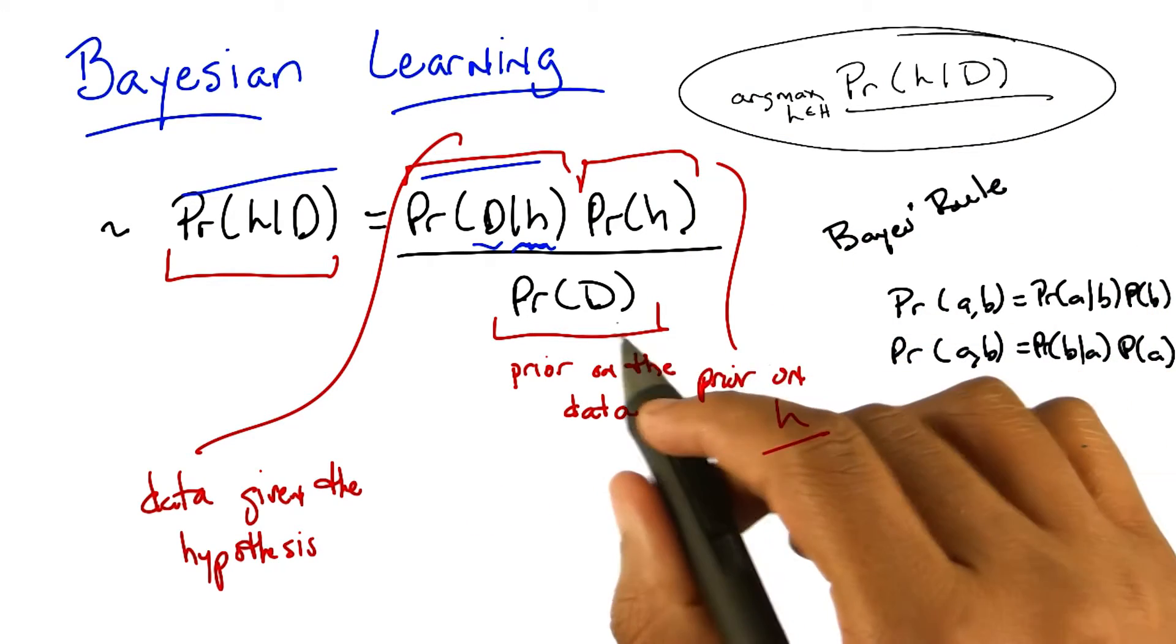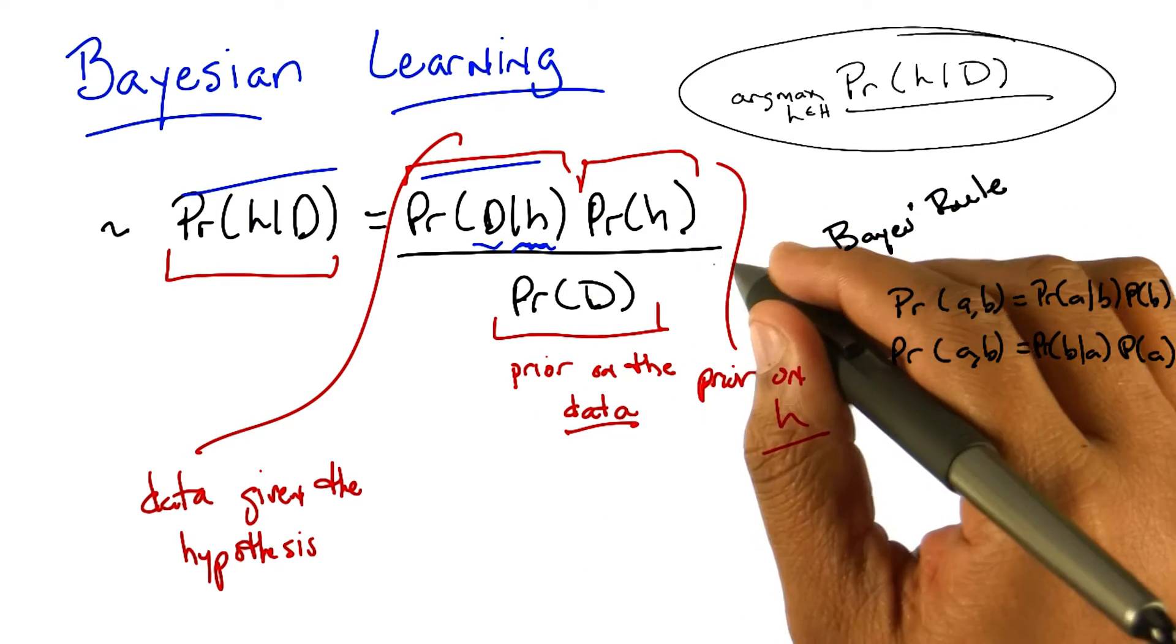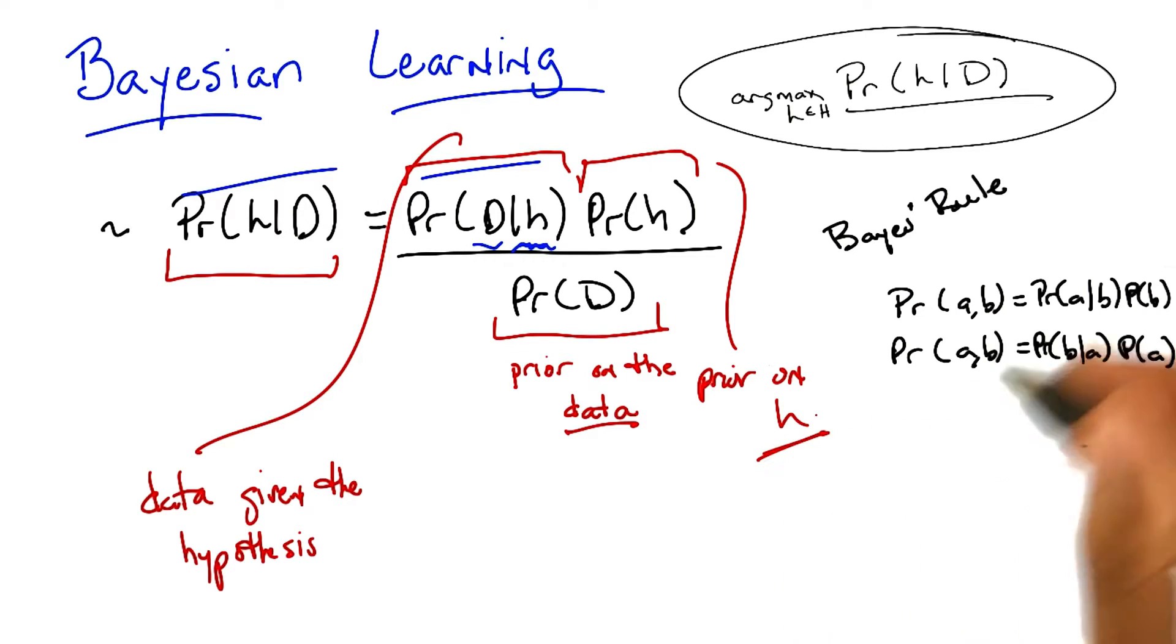So just like the probability of D is a prior on the data, the probability of H is a prior on a particular hypothesis drawn from the hypothesis space. So in other words, it encapsulates our prior belief that one hypothesis is likely or unlikely compared to other hypotheses.